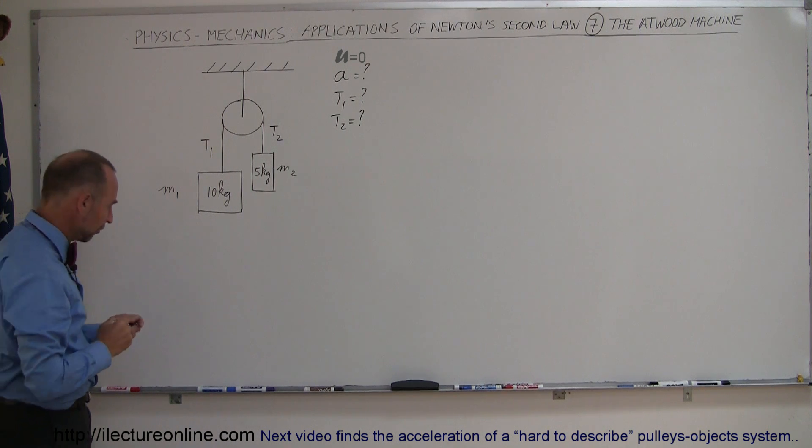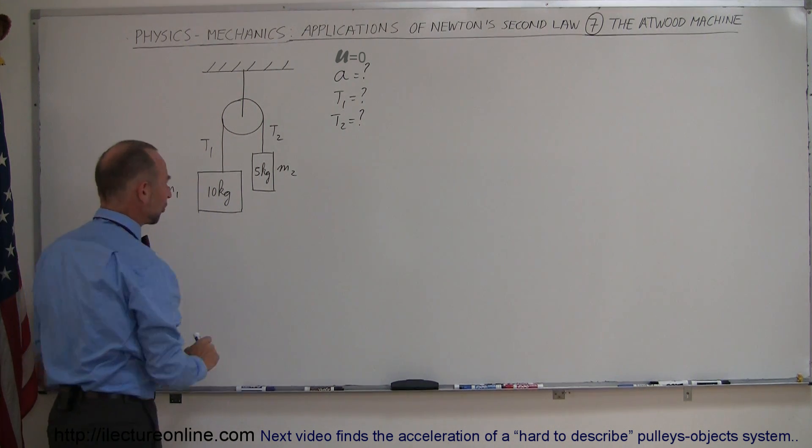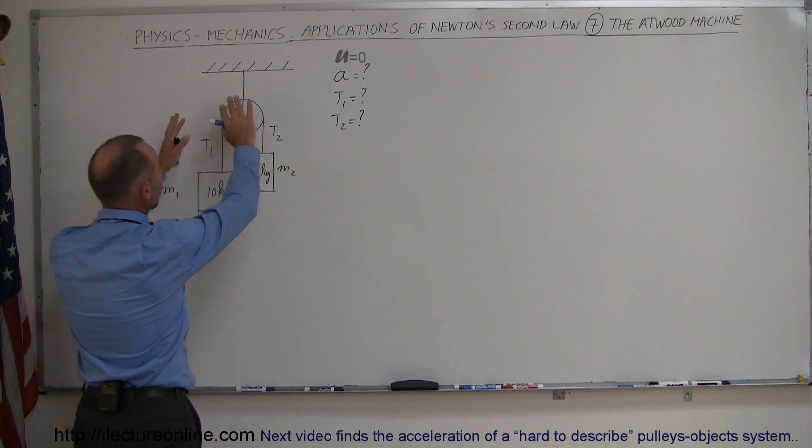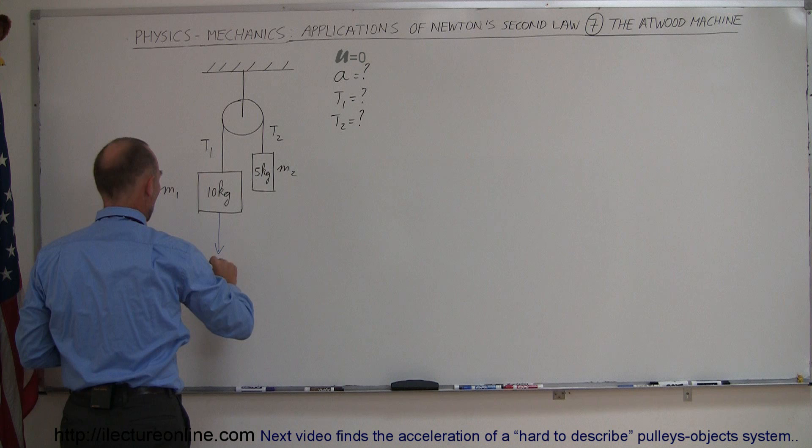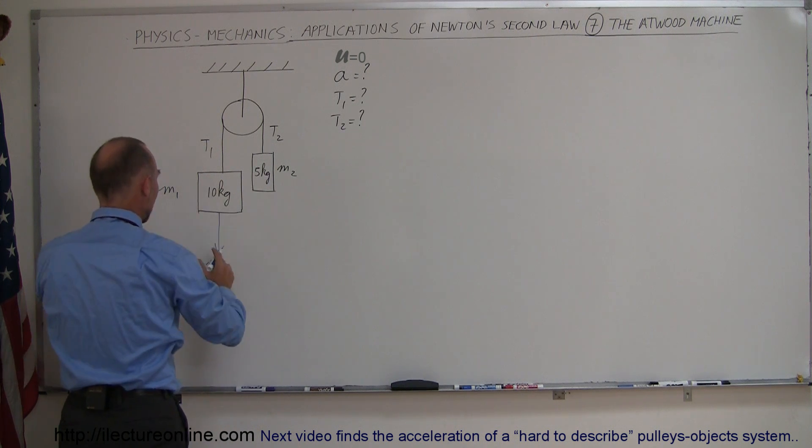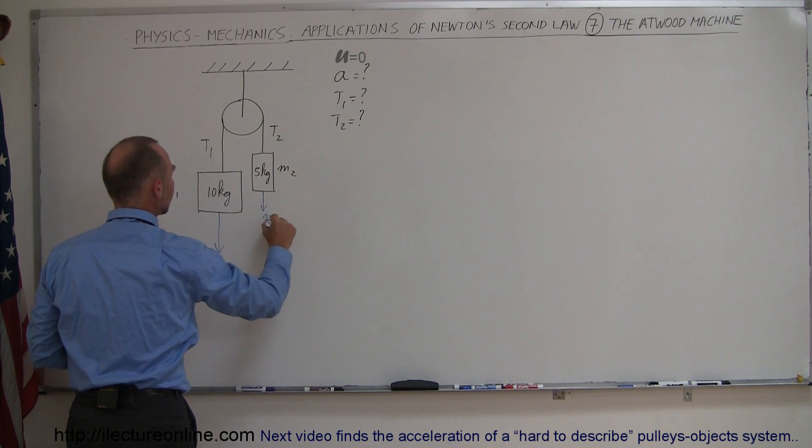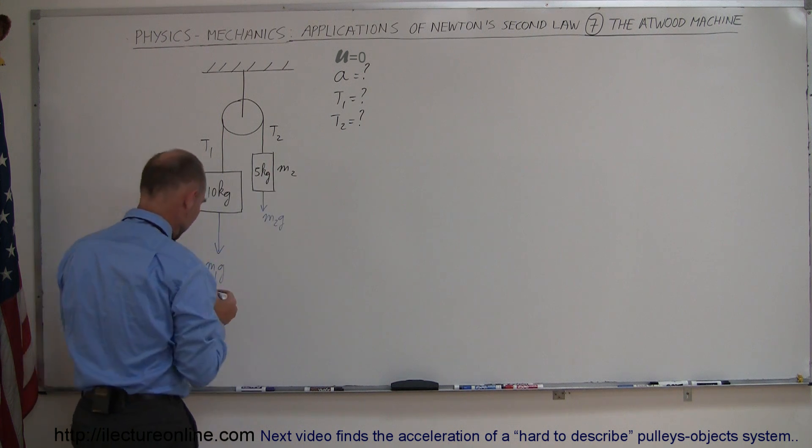Alright, let's draw all the forces acting on the system. So again I'm going to find the acceleration by looking at this as a singular system right here. We have M1g pulling down in this direction and we have M2g pulling down in this direction.